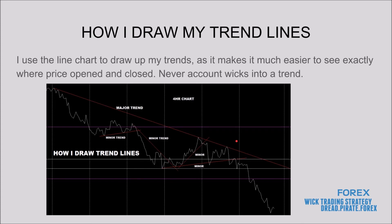Now let's talk about how I draw my trend lines. I use the line chart because it makes it much easier to see exactly where price opened and closed. I never account for wicks when drawing trends. The line chart gives you a crisp, clean picture of where price opened and closed. It's hard to draw trend lines on a bar chart because you've got wicks and candles in the way — they're bulky, and your trend lines can be inaccurate, which makes your trading inaccurate later on.